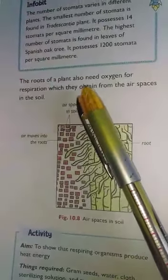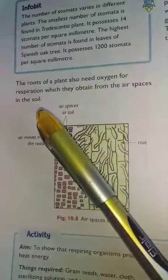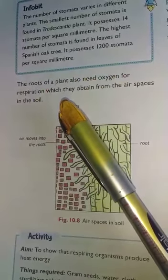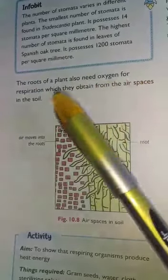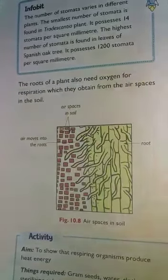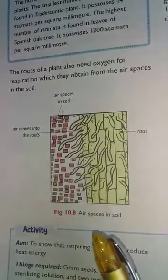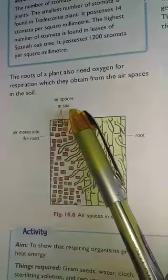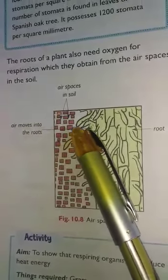The roots of a plant also need oxygen for respiration, which they obtain from the air spaces in the soil. In figure 10.8, you can see the air spaces in the soil and how air moves into the root.